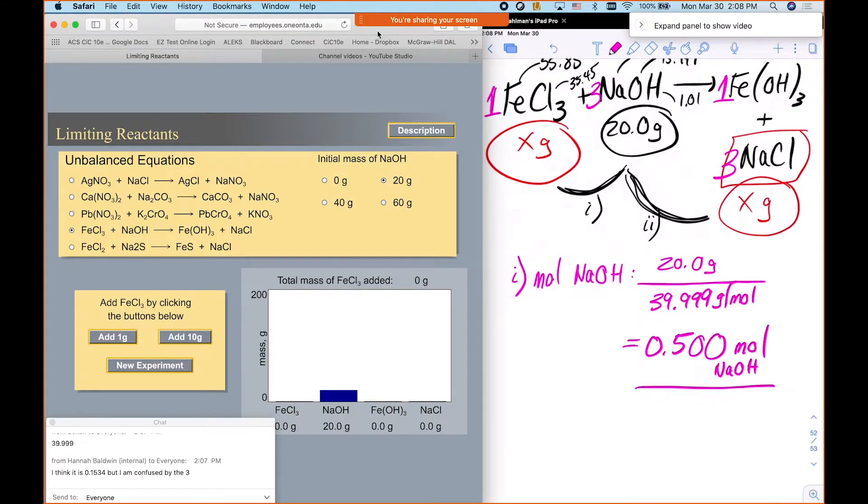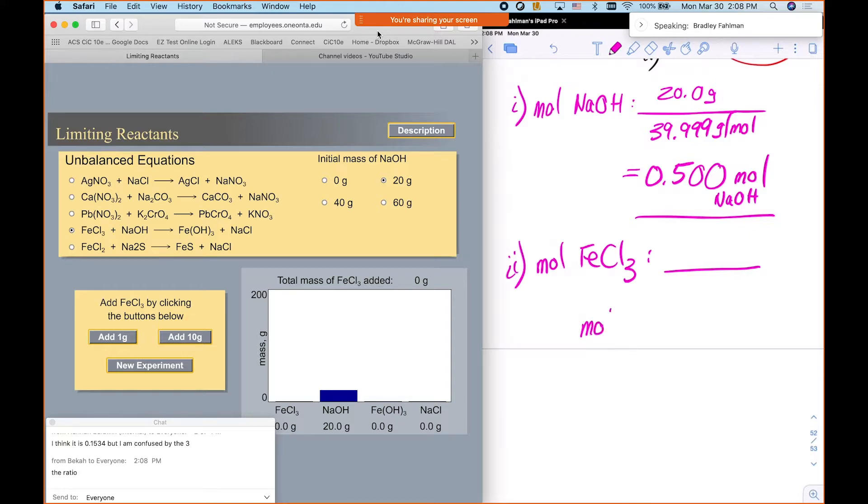Okay. So we want to know now moles of iron three chloride. So how do we get that? Okay. So if we know that it's point five for sodium hydroxide, yeah, we look at the this ratio now is a three to one, right? So in other words, we can say that moles of sodium hydroxide to moles of iron three chloride is a three to one. Okay. So if I have point five of this one, how many of that?